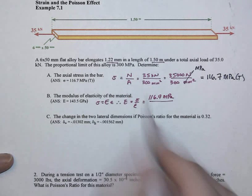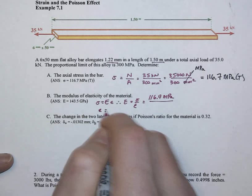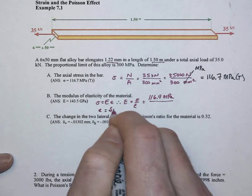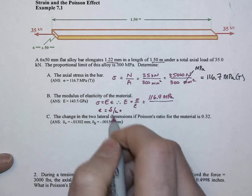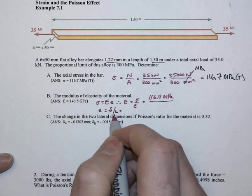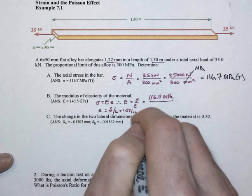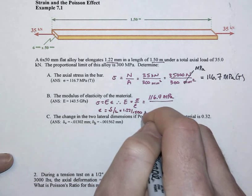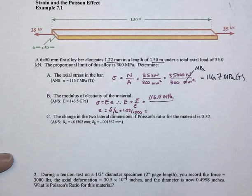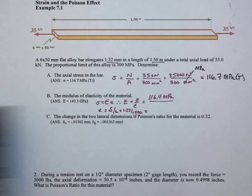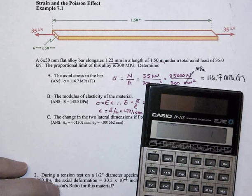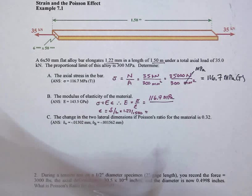And that we get from the original information that our strain is equal to delta over L, that length over which we are measuring the deformation. That's the 1.22 over 1,500 millimeters. Notice I've done that conversion already. And 1.22 divided by 1,500 is 8.13 times 10 to the minus 4th.